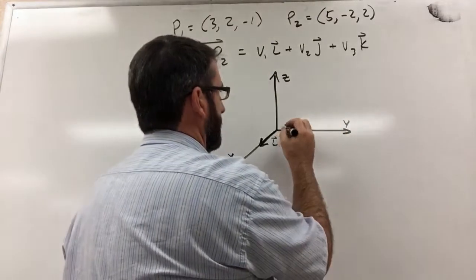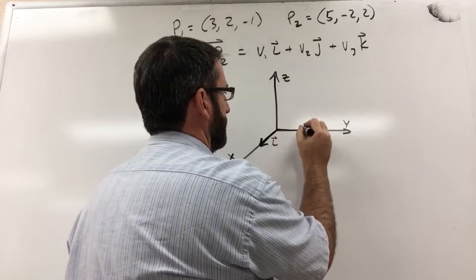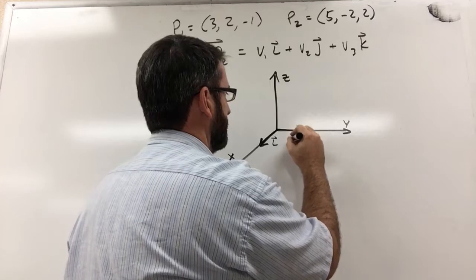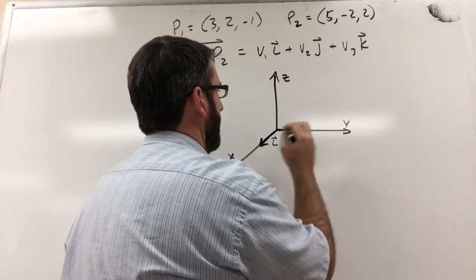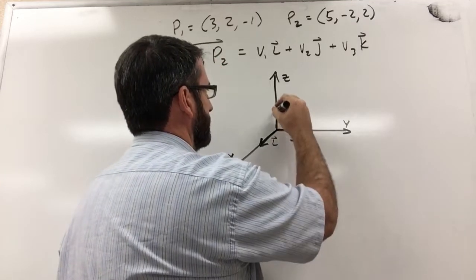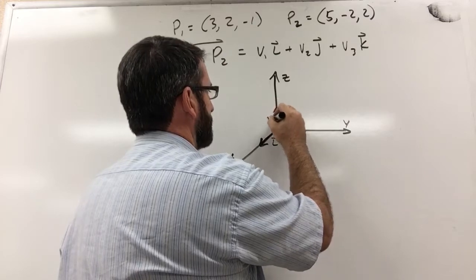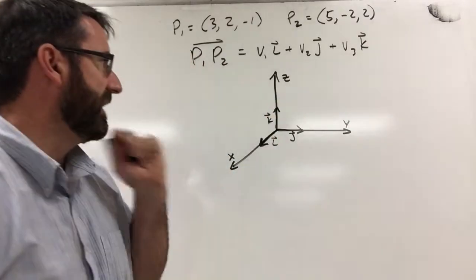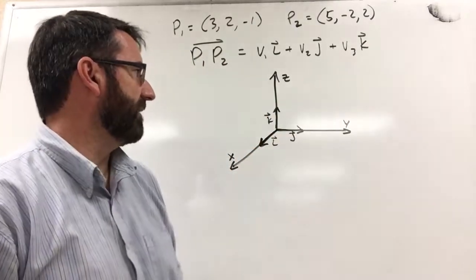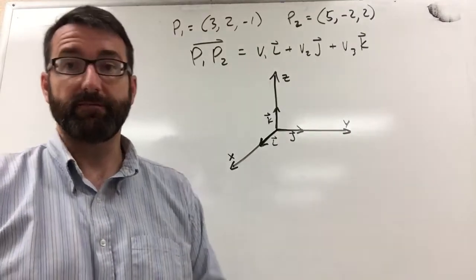And then j would be a unit vector out this direction, and then k would be a unit vector in the z direction. And these little arrows above i, j, and k indicate that they're vectors.